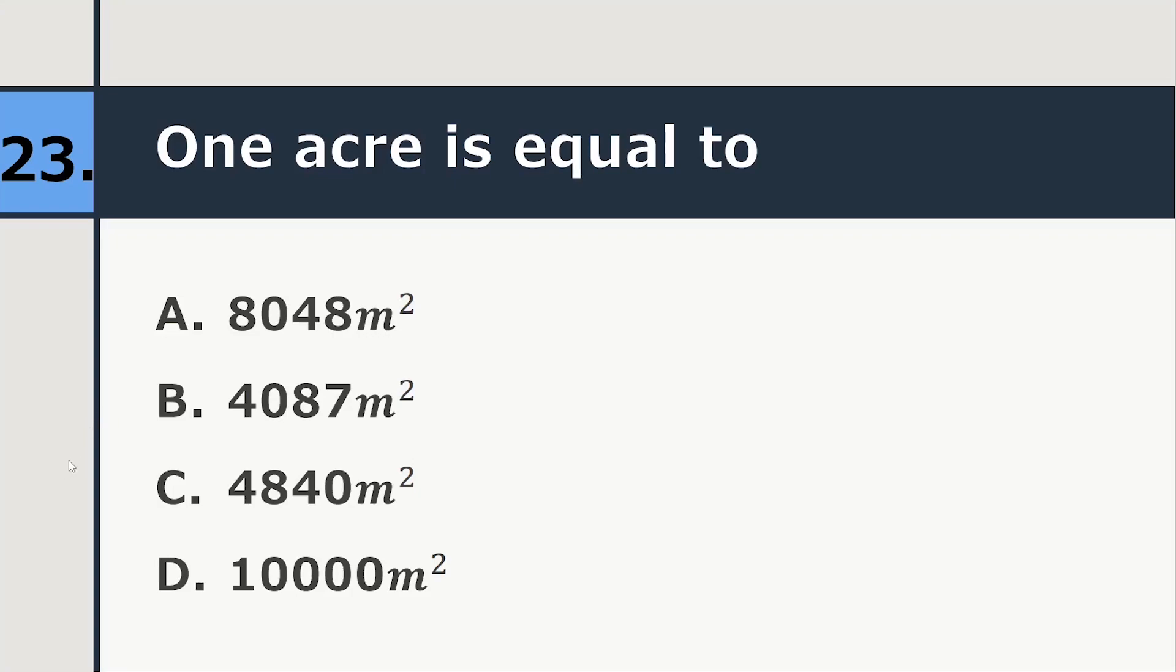One acre is equal to 8048 meter square, 4087 meter square, 4840 meter square, or 10,000 meter square. So correct answer is 4087 meter square.